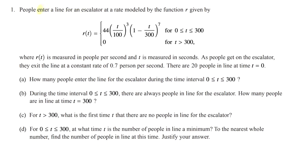Number one is about people entering a line for an escalator at a rate modeled by function R. R of T represents the entering rate, measured in people per second. It's a piecewise function: from zero to 300 seconds, people are entering; after 300, nobody enters. Don't get intimidated by the complex expression — this is a calculator problem, so you're expected to use technology rather than doing calculus by hand.